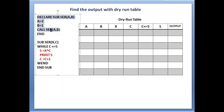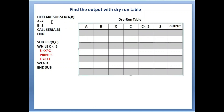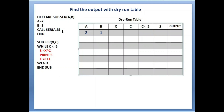We start from the main module. Let's write the variable values. a equals to 2, so I will write 2 here. Then in the next line b equals to 1, so I will write 1 here. After that we call the sub procedure 'ser' and we are passing the values of a and b.